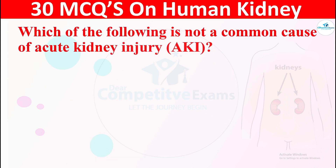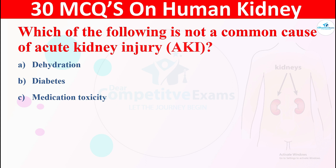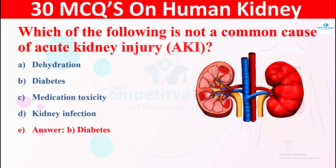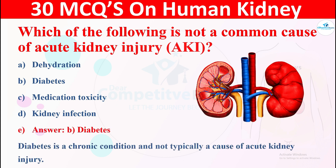Question 26: Which of the following is not a common cause of acute kidney injury (AKI)? The options are: A) dehydration, B) diabetes, C) medication toxicity, or D) kidney infection. The right answer is diabetes. Diabetes is a chronic condition and not typically a cause of acute kidney injury.